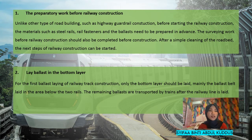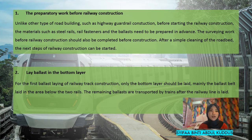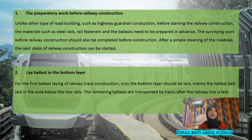Next is the railway construction process, which we have concluded into six steps. The first step is preparatory work before railway construction. Unlike other types of road building such as highway guardrail construction, before we start, the materials such as steel rails, rail fasteners, and ballast need to be prepared in advance. The surveying work should also be completed before construction. After a simple cleaning of the road pad, the next step can begin.